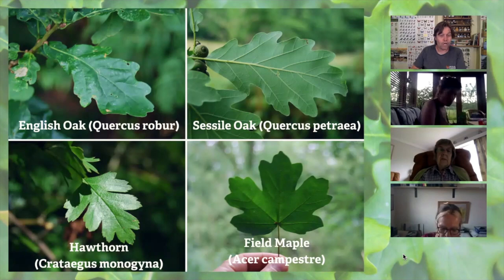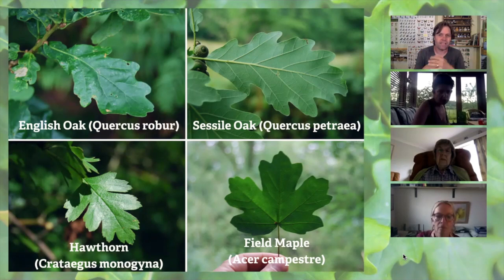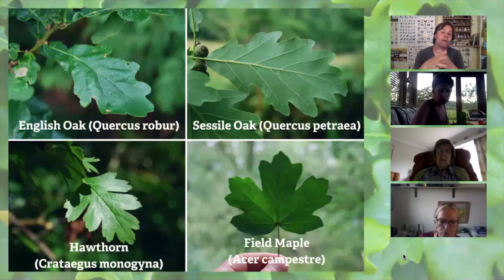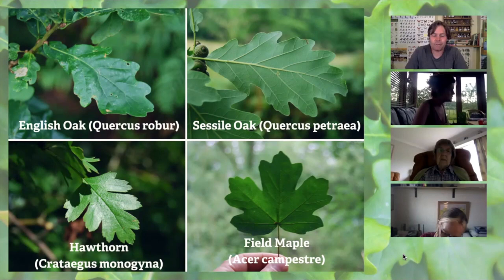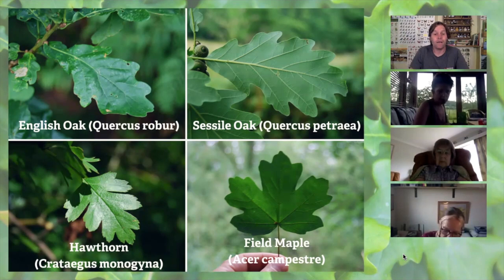Lobed leaves — not many of these. The main ones are the two native oaks: the English or pedunculate oak, more common in south and central England, and the sessile oak, more uplands, north and west of Britain — we get more sessile oak in Wales. Both have deeply lobed leaves with a wobbly edge. Hawthorn also has a deeply lobed leaf, which can look a little like an oak. Field maple could also be considered lobed, but it belongs more in the maple-like category.